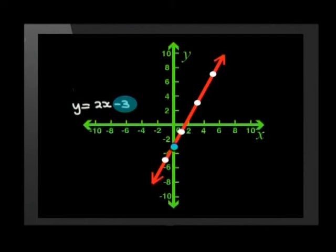If we look at our graph, its formula was y equals 2x minus 3. And yes, it cuts the y-axis at negative 3. We can check this another way as well.